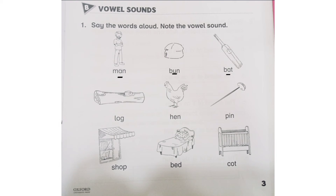Look at the fourth picture: Log. Log means a piece of wood. Find out the vowel sound in Log. O is the vowel sound in the word Log — underline the O. Now look at the next picture: Hen — H, E, N. Which is the vowel sound in Hen? E is the vowel sound in Hen — underline the E. I hope you understand now — it's your turn.